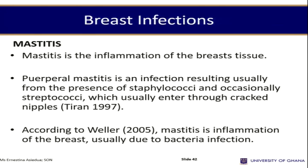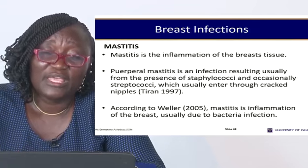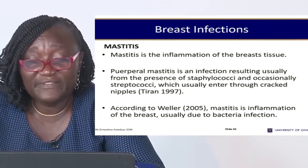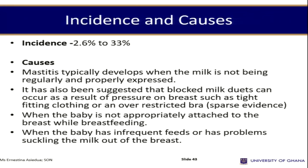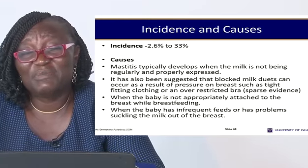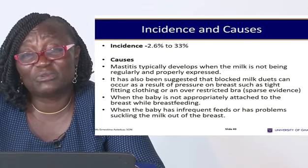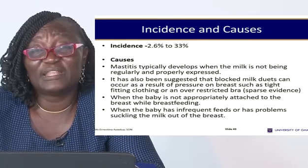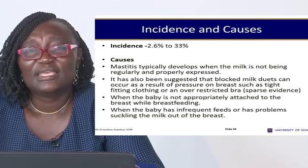Breast infections during the puerperium are referred to as mastitis — inflammation of the breast — which can progress to breast abscess. Mastitis is usually due to bacterial infection, with an incidence of about 2.6 to 3.3 percent. It typically occurs when milk is not regularly and properly expressed. If the baby cannot suckle well — particularly premature babies whose suckling reflex is immature — the breast becomes engorged and inflammation develops.